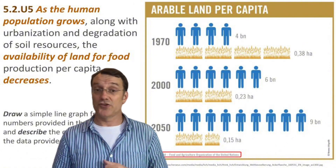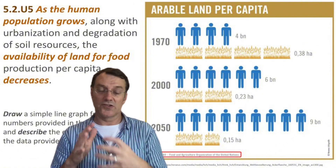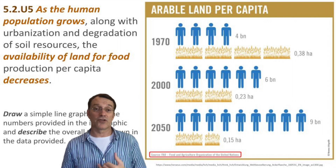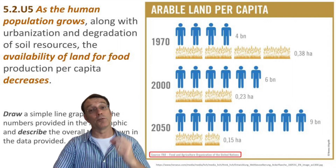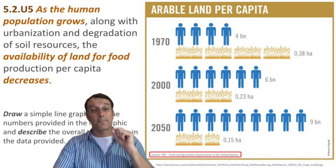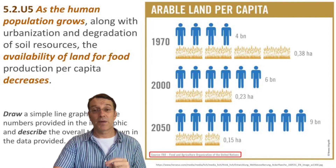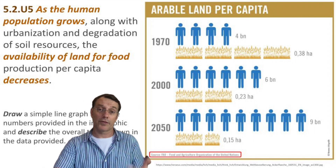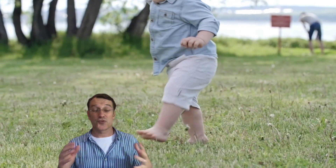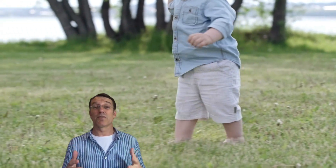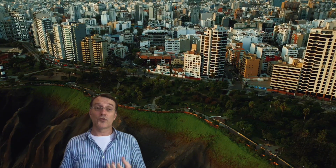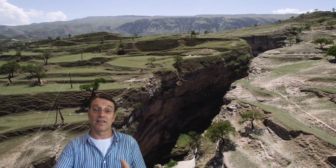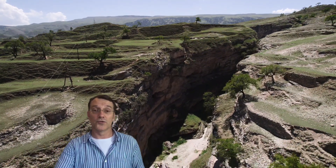As our global human population grows, we're facing a squeeze on farmland. In 1960, there was about 0.42 hectares of arable land available per person globally, but by the year 2050, that's expected to shrink to just 0.14 hectares per person — a third of what it previously was. This trend is driven by population growth, but also by urbanization eating up farmland, and soil degradation making some land that used to be arable no longer usable.